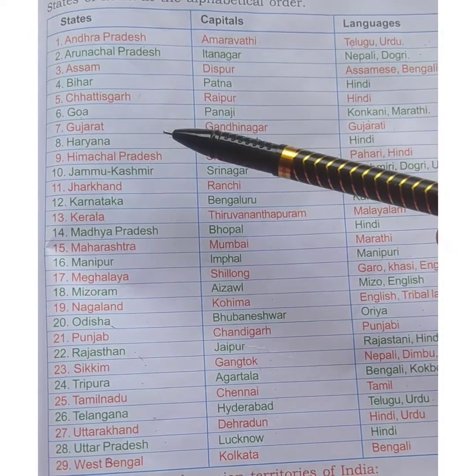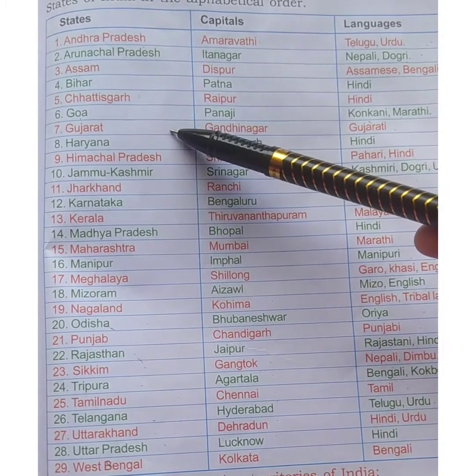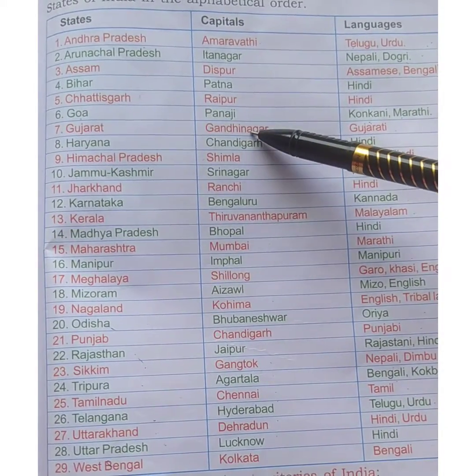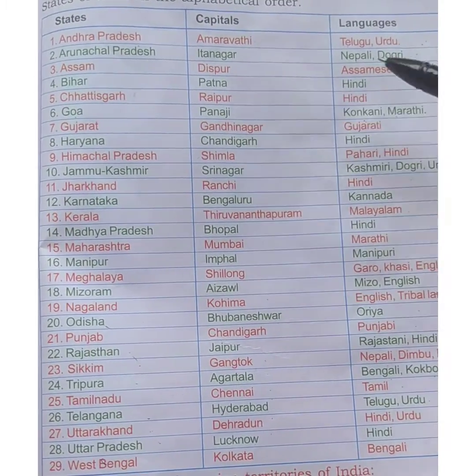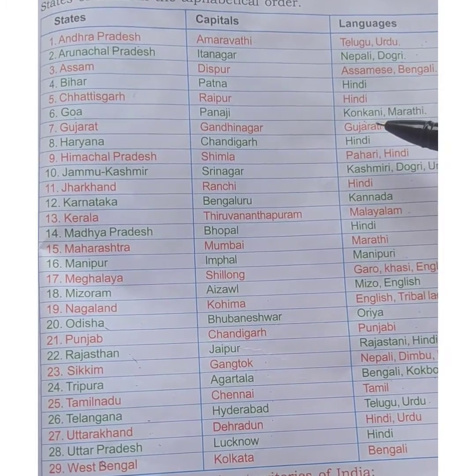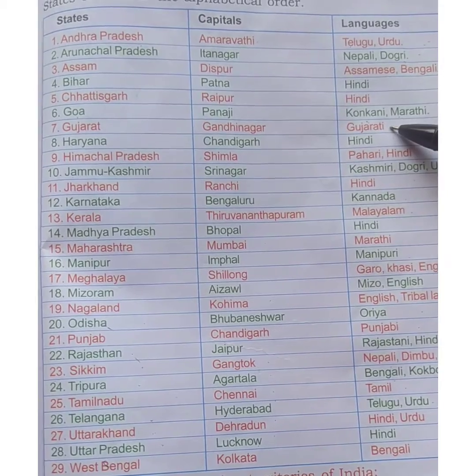Next is Gujarat. The capital is Gandhinagar. The language spoken is Gujarati.